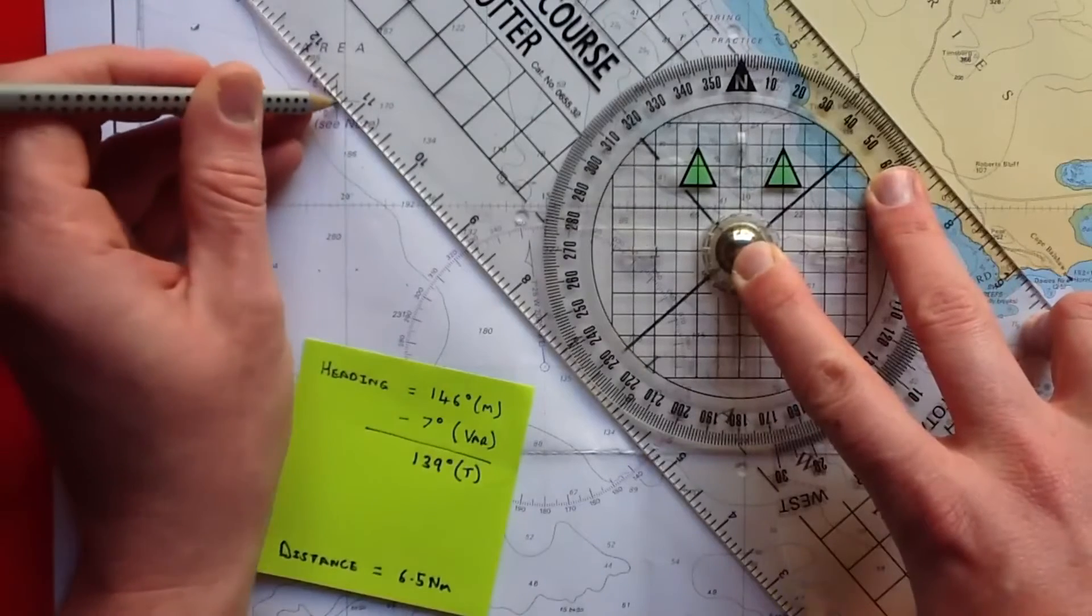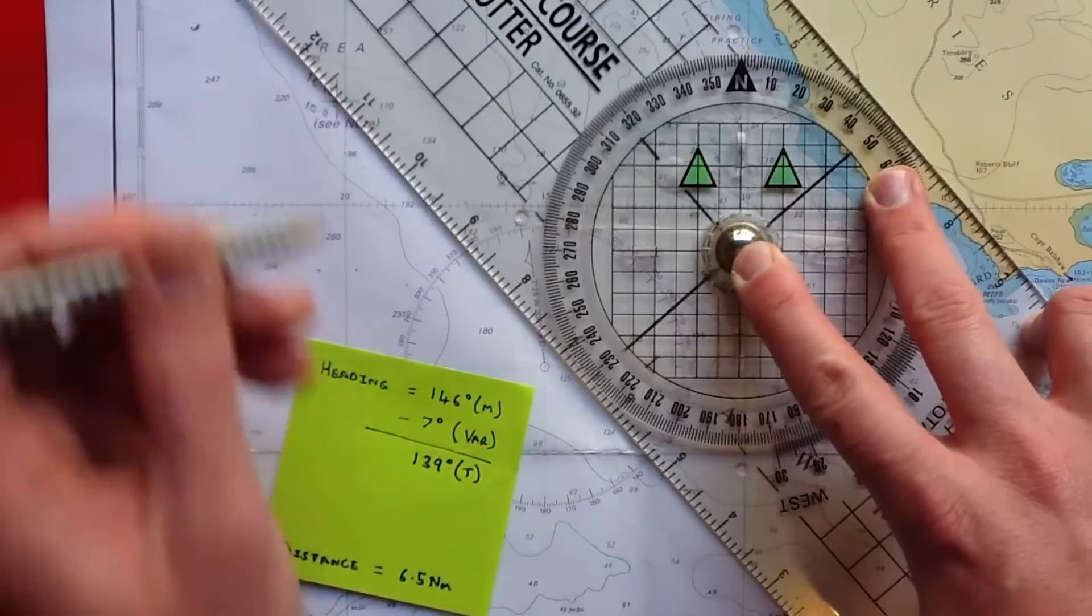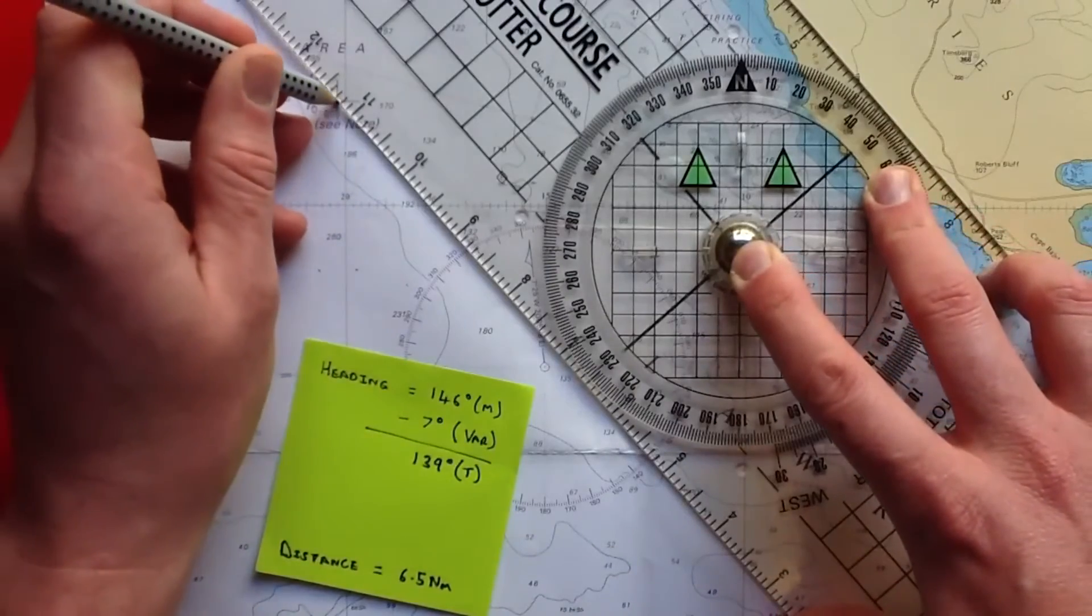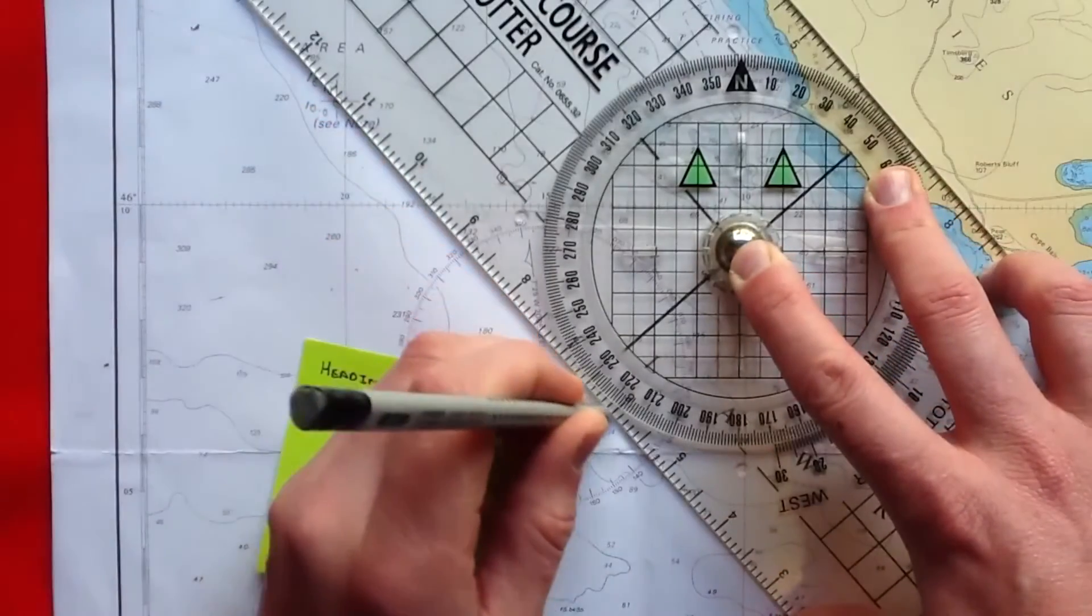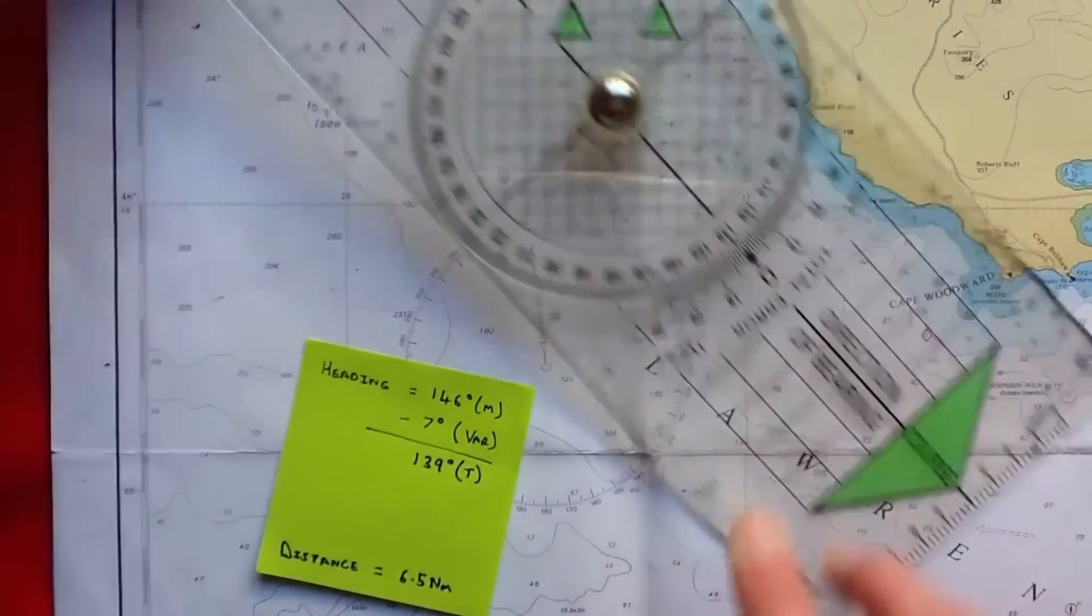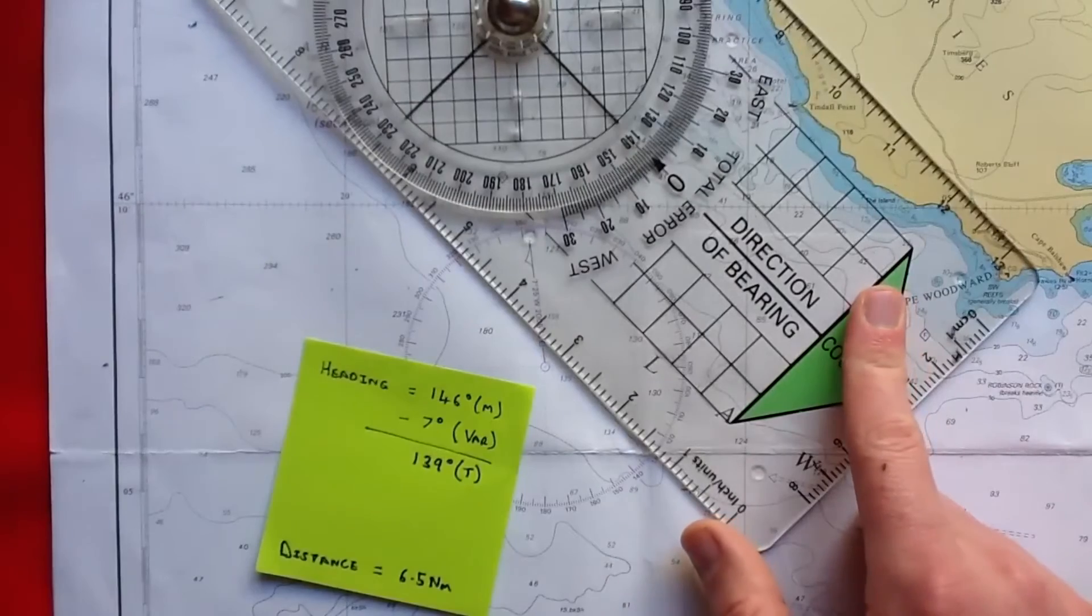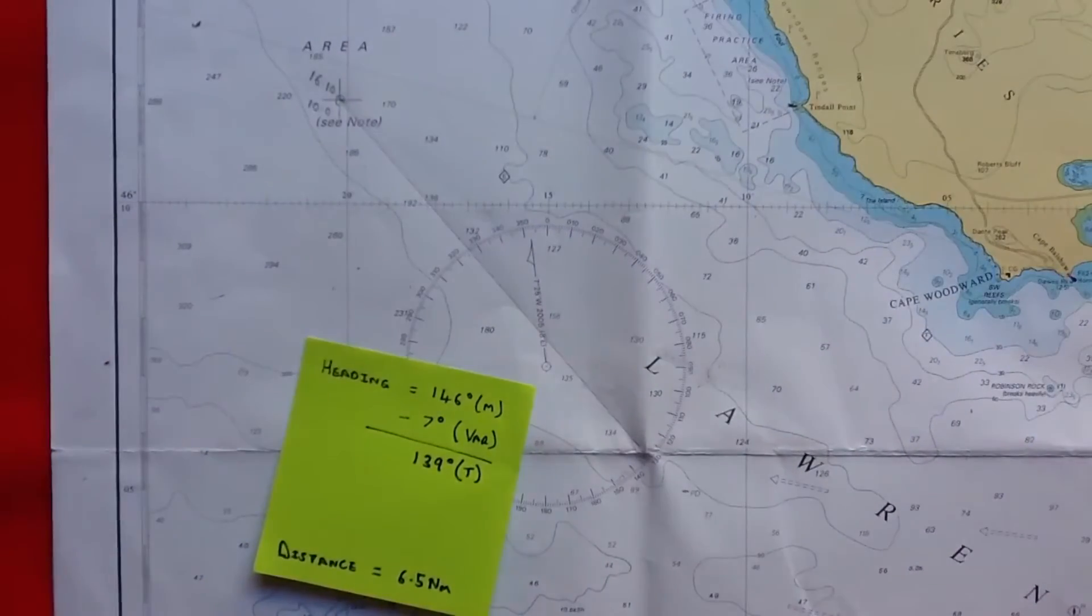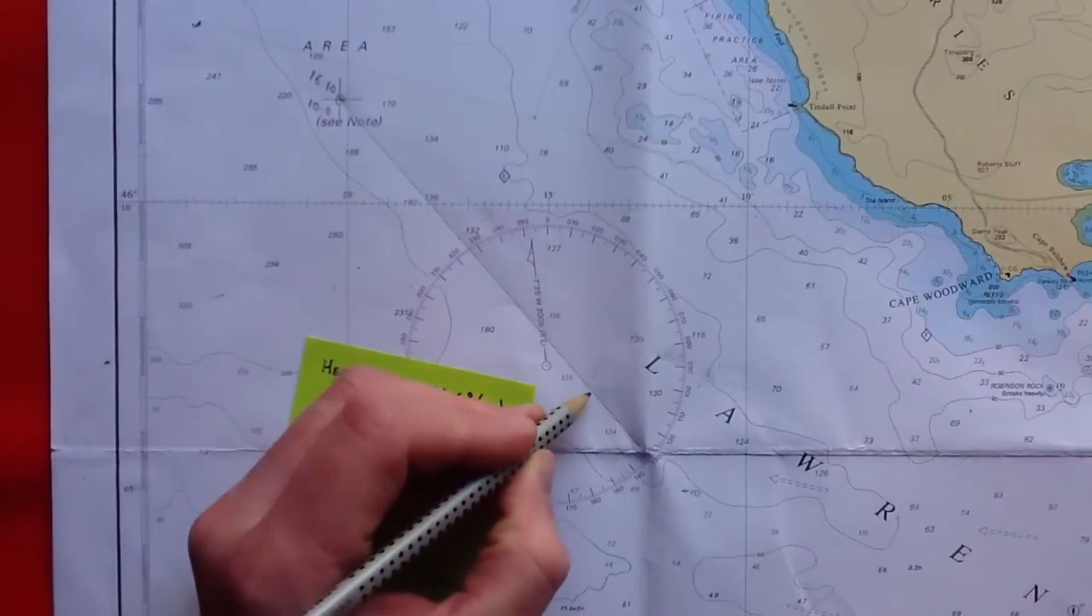Once we've done that, and you can see this edge is lined up with our start position, we draw in the direction of travel. And if we're not sure which is our direction of travel, there's a handy arrow pointing in that direction. So this is the direction in which we wish to travel.